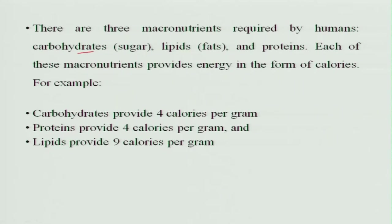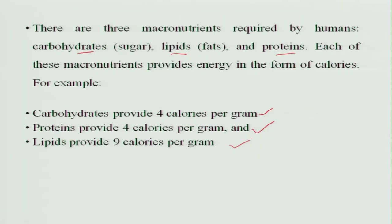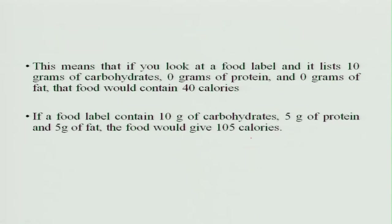There are 3 macronutrients required for human beings: carbohydrates, lipids, and proteins. Each of these macronutrients provides energy in the form of calories. Carbohydrates provide 4 kilocalories per gram, proteins provide 4 kilocalories per gram, and lipids provide more than 2 times the calories of carbohydrates and proteins — that is 9 kilocalories per gram.